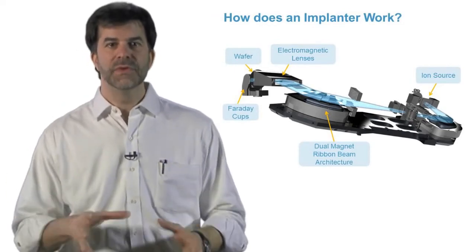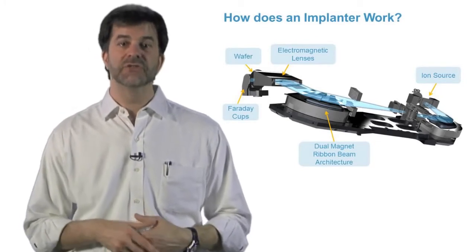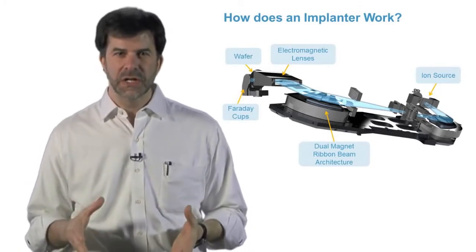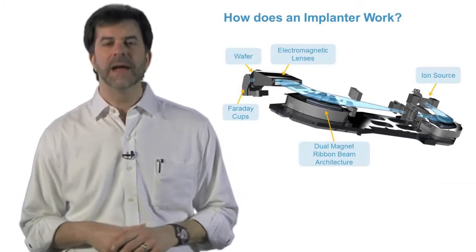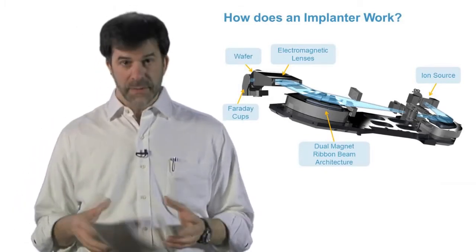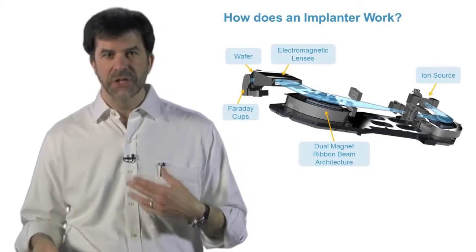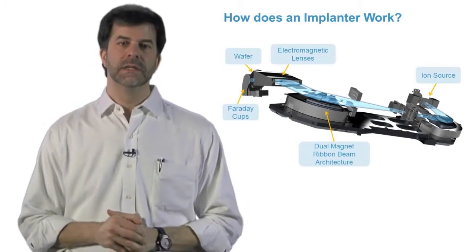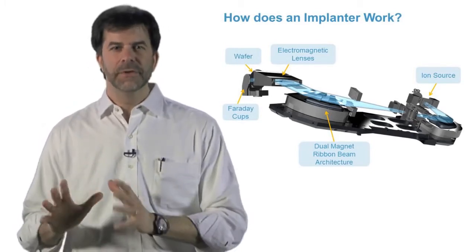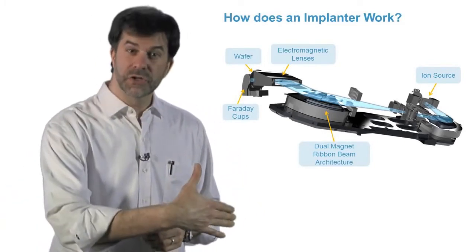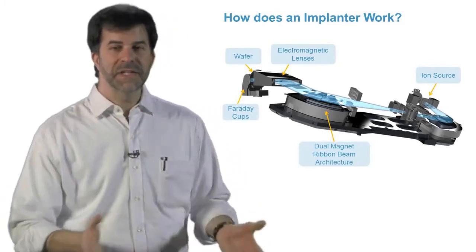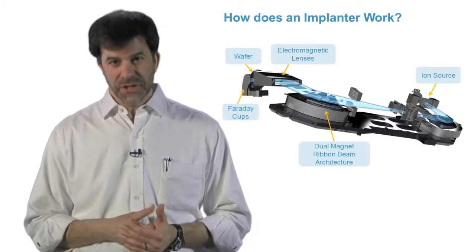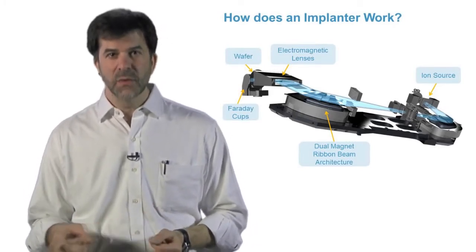The nascent ion beam with this soup of different ions enters the mass analysis electromagnet. This massive piece of metal weighing about six tons has precision windings wrapped around a ferromagnetic core. The implant control system can accurately and precisely adjust the magnetic fields by the amount of current that passes through the copper windings. This magnetic field will cause the ion beam to bend through the curvature of the magnet. Mass analysis magnets are typically 90 degrees, give or take. By adjusting the field, we can select the ion we want to implant.